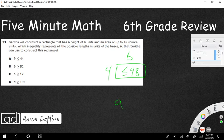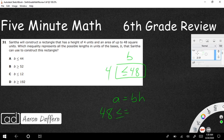Which inequality represents all the possible lengths in units of the basis B that Saritha can use to construct? Well, let's just first make sure we understand how we can find the area of a rectangle. Area of a rectangle is a very simple equation. And that's just going to be area equals base times height. Well, in this case, we know that our area is going to be 48 or less. And we know that our height is going to be 4. So what we could say here is that our base, if we were to put our area is going to be 48 or less.